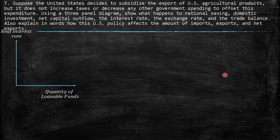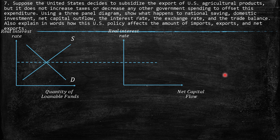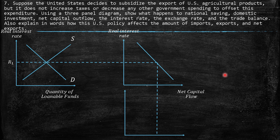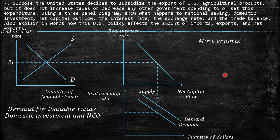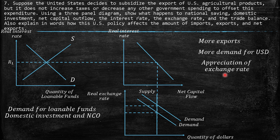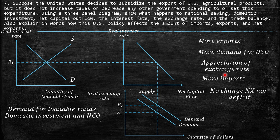In the top-left panel we have the real interest rate and quantity of loanable funds — the market for loanable funds determines the real interest rate, which determines the net capital flow. This is pretty much similar to the previous exercise. We have an increase in demand, so as a consequence we have more exports, but then there is more demand for US dollars, then appreciation of the exchange rate, so a consequence of more imports. It's similar to the previous one: increase in imports, increase in exports, and net exports remain the same.